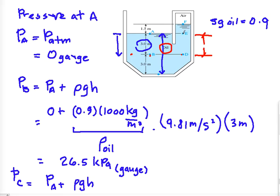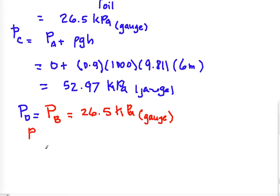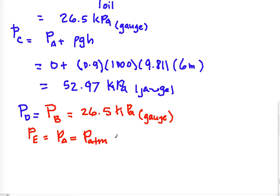Pressure at point E, also at the same elevation as point A, so it also has the same pressure as A, which is zero gauge or atmospheric pressure.